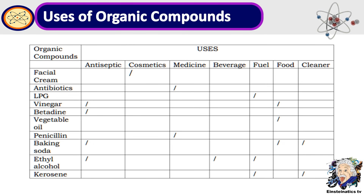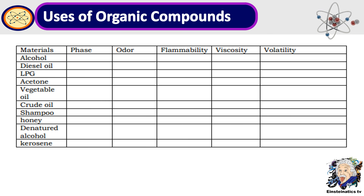Here are the correct responses. Facial cream is used for cosmetics, antibiotics for medicine, LPG is used for fuel, vinegar can be used as an antiseptic and food as well. Betadine for antiseptic, vegetable oil for food, penicillin for medicine, baking soda can be used for antiseptic, food, and of course cleaner. Still alcohol is also used for antiseptic, beverage, and fuel. On the other hand, kerosene is used as fuel and of course for cleaner.